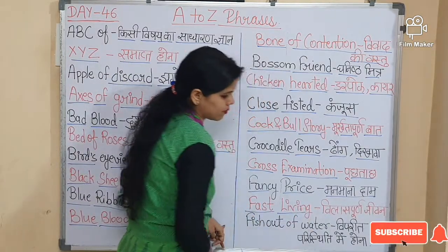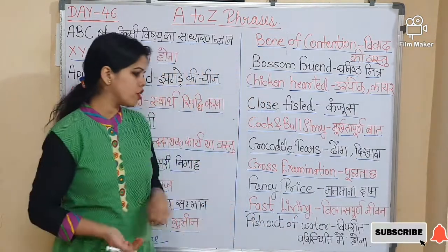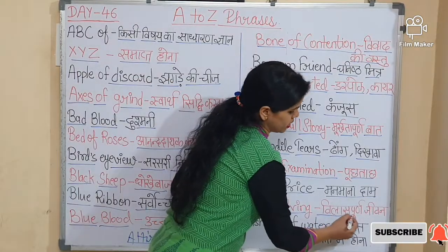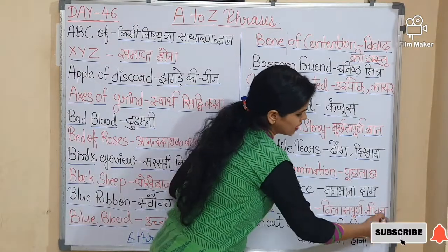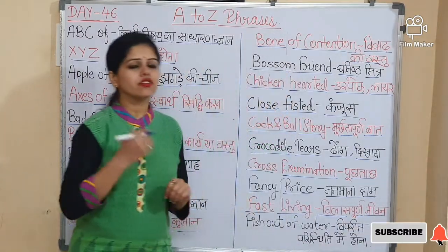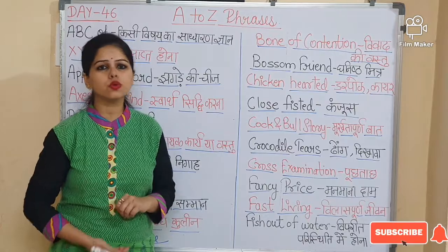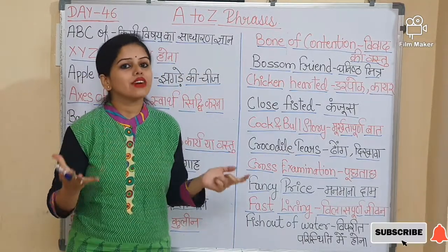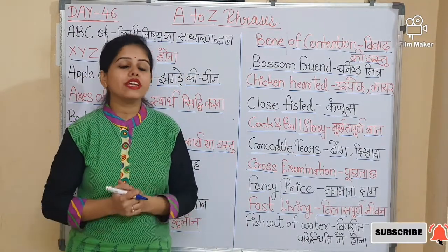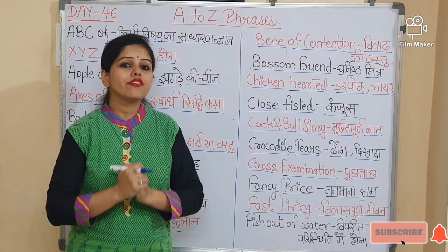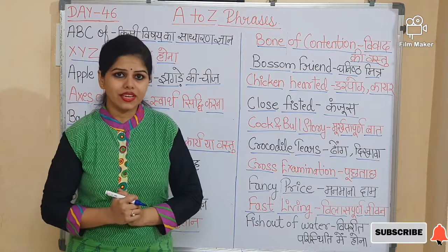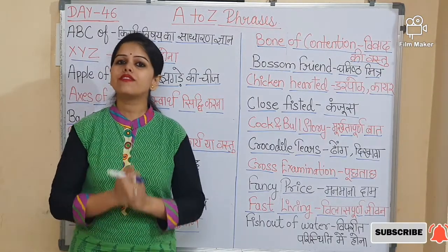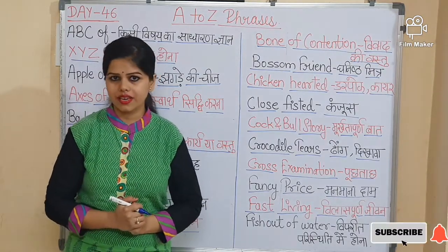Now, 'Fast living'. Fast living means vilasitapurn jeevan — a luxurious or extravagant lifestyle. The sentence is: I have a dream to live a fast living.